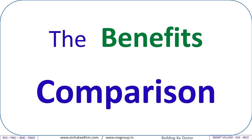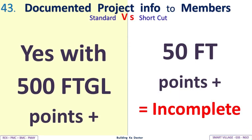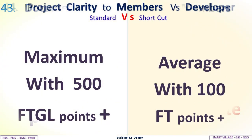Benefits comparison: Documented project info to members — Standard: 500 FTGL points plus; shortcut: 50 FT points plus, which is incomplete. Project clarity to members versus developers — Standard: maximum with 500 FTGL points; shortcut: average with only 100 FT points.